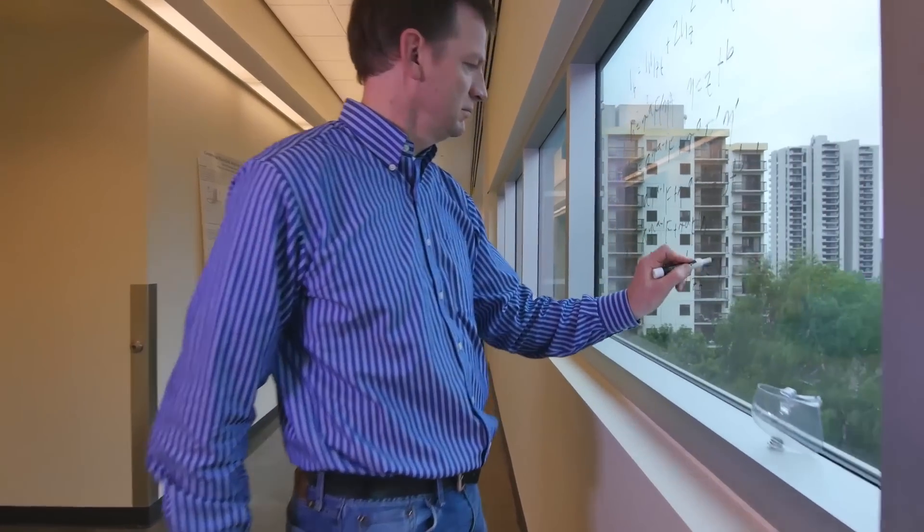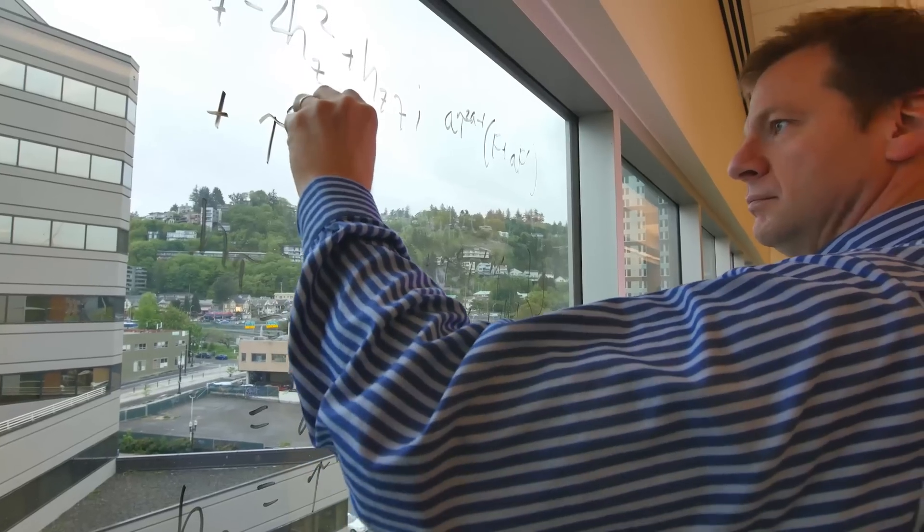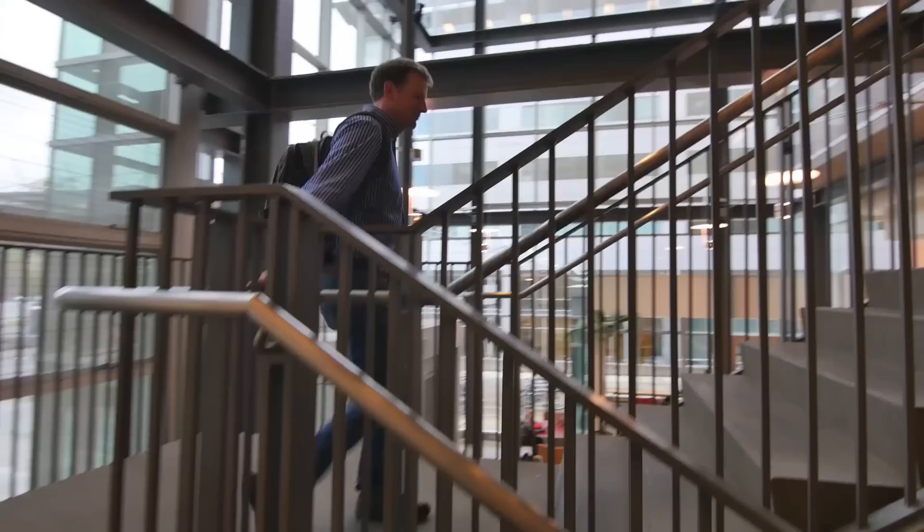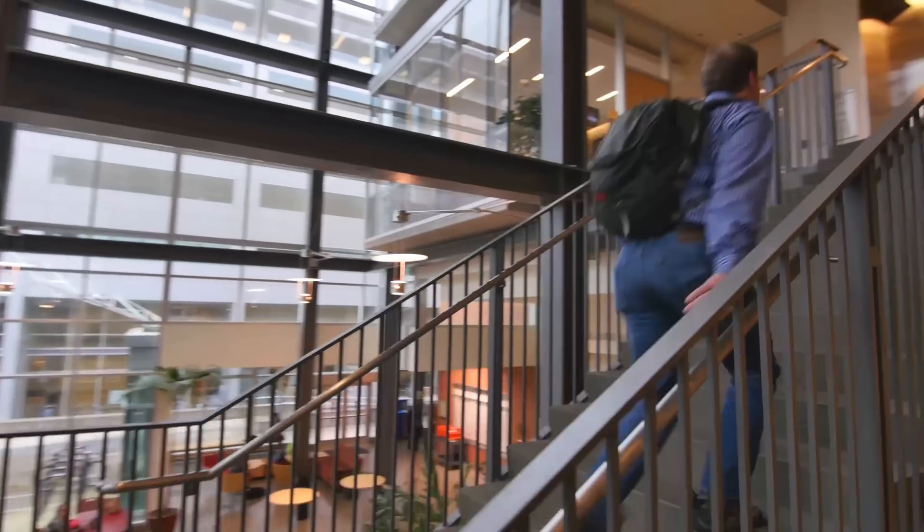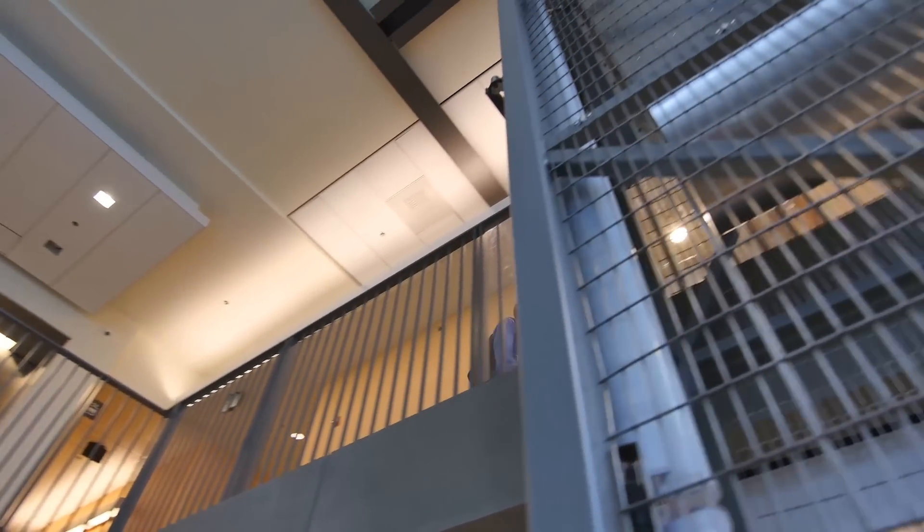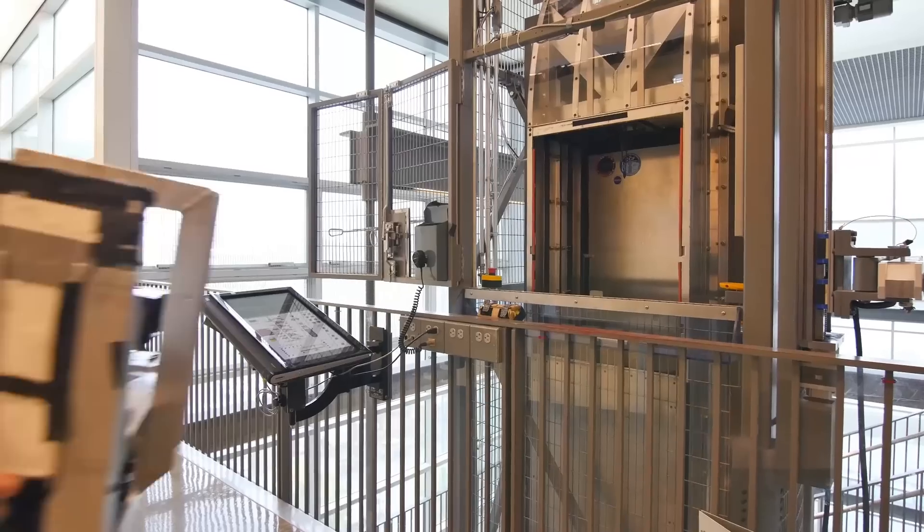To go to space is a very expensive action. Oftentimes we want to test our theories on the ground. We use a drop tower at Portland State University. If we design the experiment correctly, we can see exactly what the astronauts would see in space.